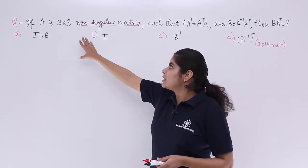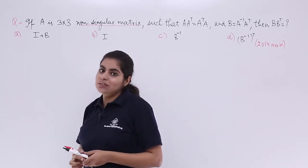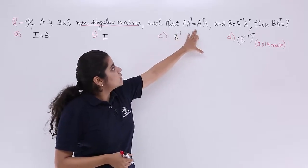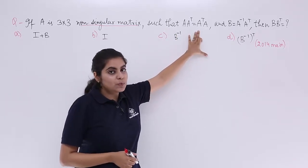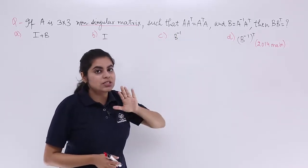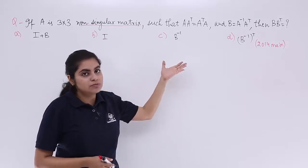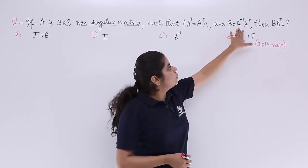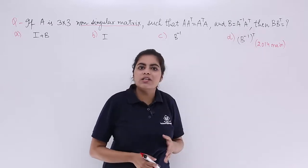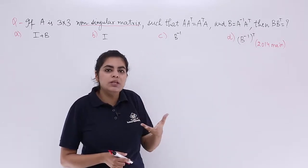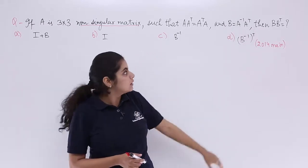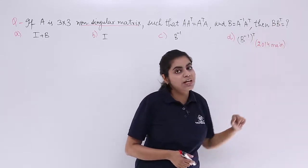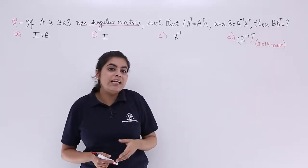What we need to see is the order, which is 3x3. The condition given is A times A-transpose equals A-transpose times A. I have to use this whenever needed. And B is equal to A-inverse times A-transpose. The question asks: what is the value of the expression BB-transpose?